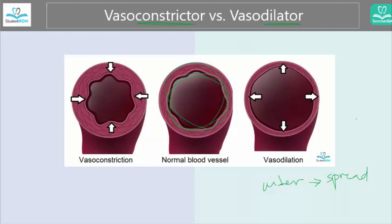The second problem with a wider, vasodilated blood vessel is that there is more blood coming out of the area. If you are doing a scaling and root planing, if you're doing a prophy, especially a perio surgery, you don't want the blood coming out — you want it to be as dry as possible.